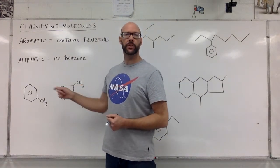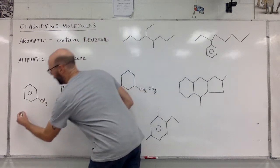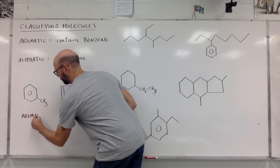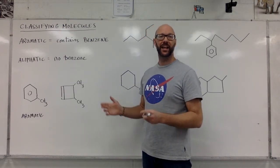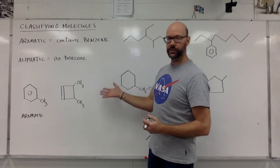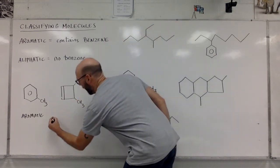Here's a hexagon with a circle in the middle. That's benzene. This is aromatic. Here, it happens to be a cycloalkene, which is besides the point. I don't see the benzene ring. If I don't see the benzene ring, it's aliphatic.